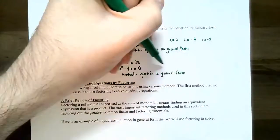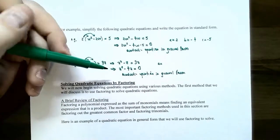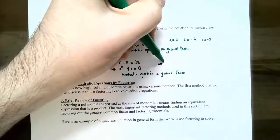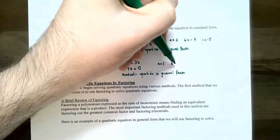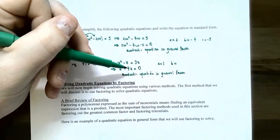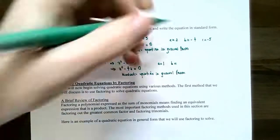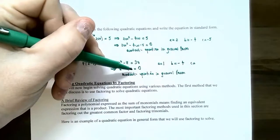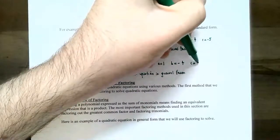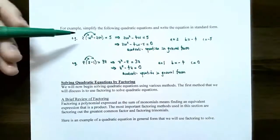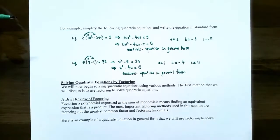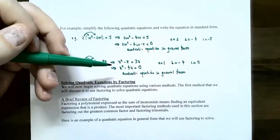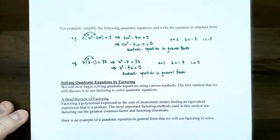Subtract 3z from both sides: z squared subtract 3z minus z gives negative 4z equals zero. The equation is equal to zero and all terms are on one side. Even though there is no constant term, it's still a quadratic equation in general form. So a is one, b is negative four, and c is zero. This gives you an idea of how to rewrite or simplify equations to identify whether they're linear or quadratic, and if quadratic, rewrite them into general form.